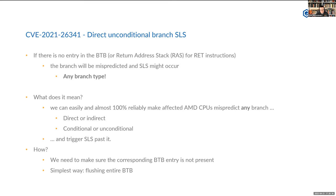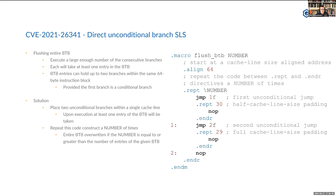We know that if there is no BTB entry for a given branch it can be mispredicted and SLS may occur — that's true for any kind of branch. In practice this means we can easily and reliably make affected AMD CPUs mispredict any branch, regardless of whether it's direct, indirect, conditional, or unconditional, and have the following instructions executed speculatively. To do this we just need to ensure the BTB has no entry for a given branch. The simplest way is to flush the entire BTB by executing enough unconditional branches up front to consume every BTB entry.